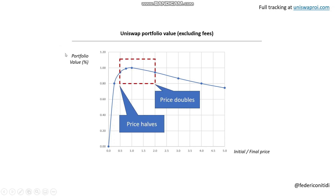The idea today is to provide you with a possible strategy based on options that offset the impermanent loss within a certain price range. For simplicity, I picked the range between 0.5 and 2, which corresponds to the scenario where the price halves or the price doubles compared to where it was when you invested.